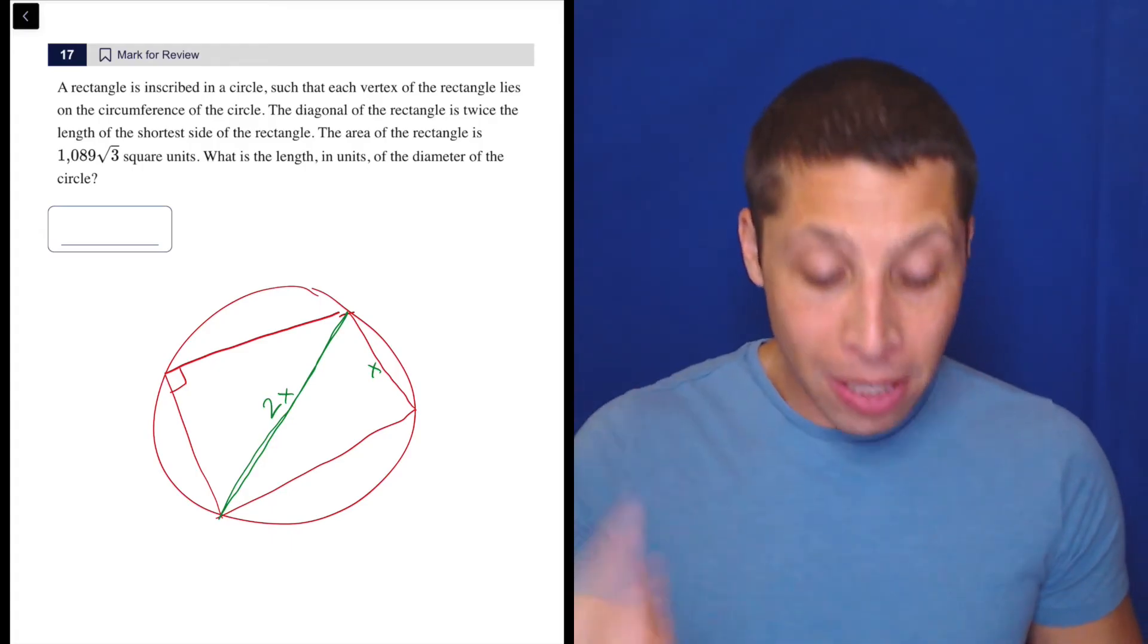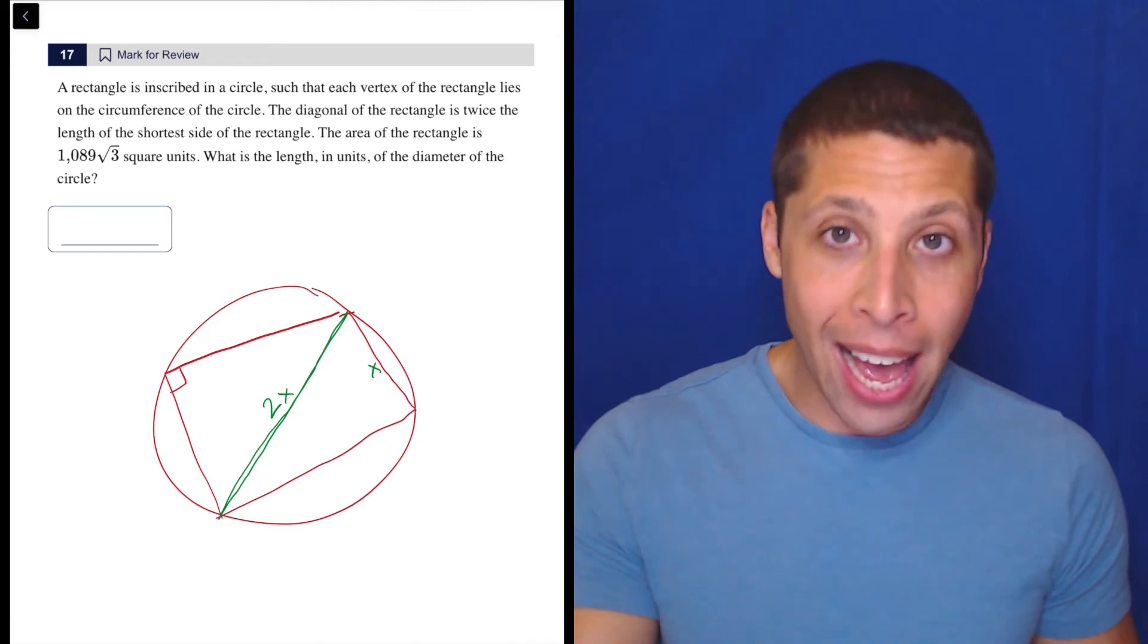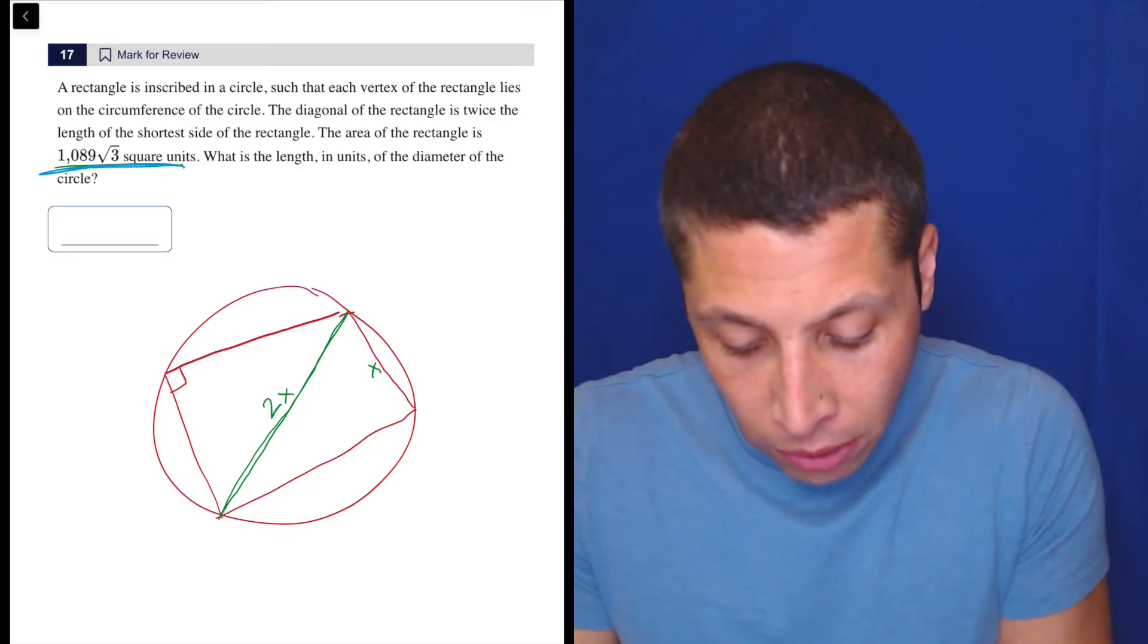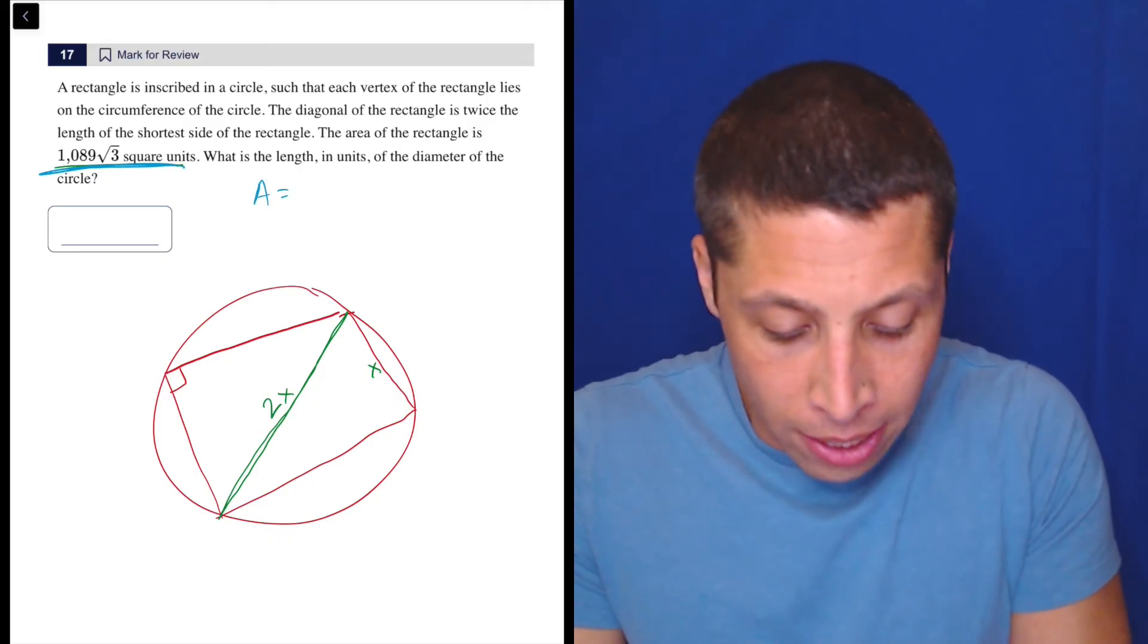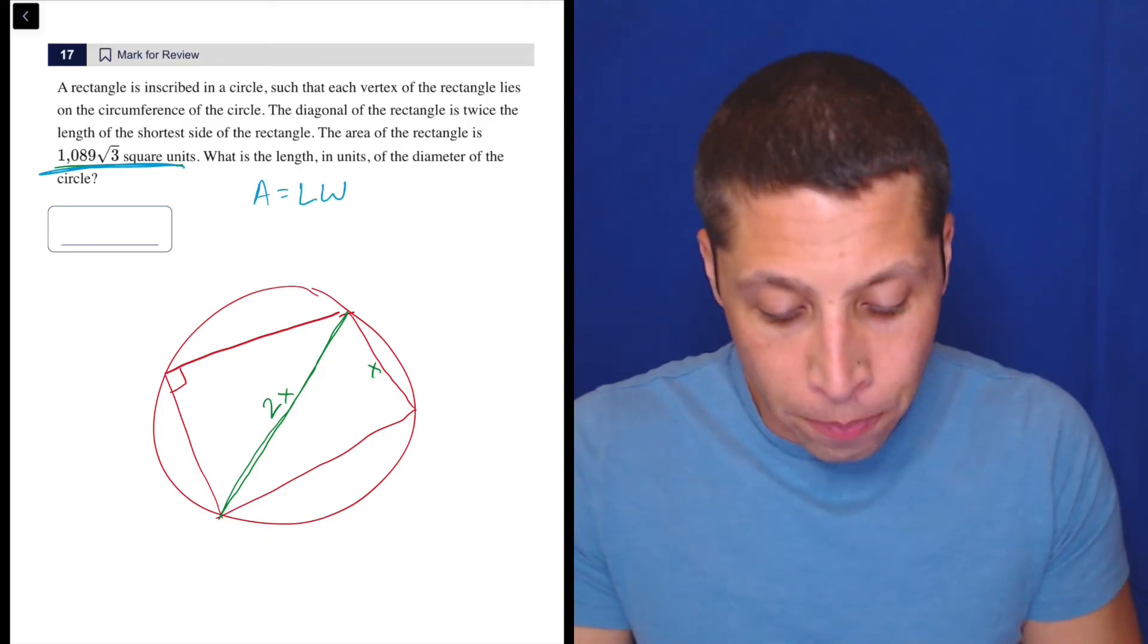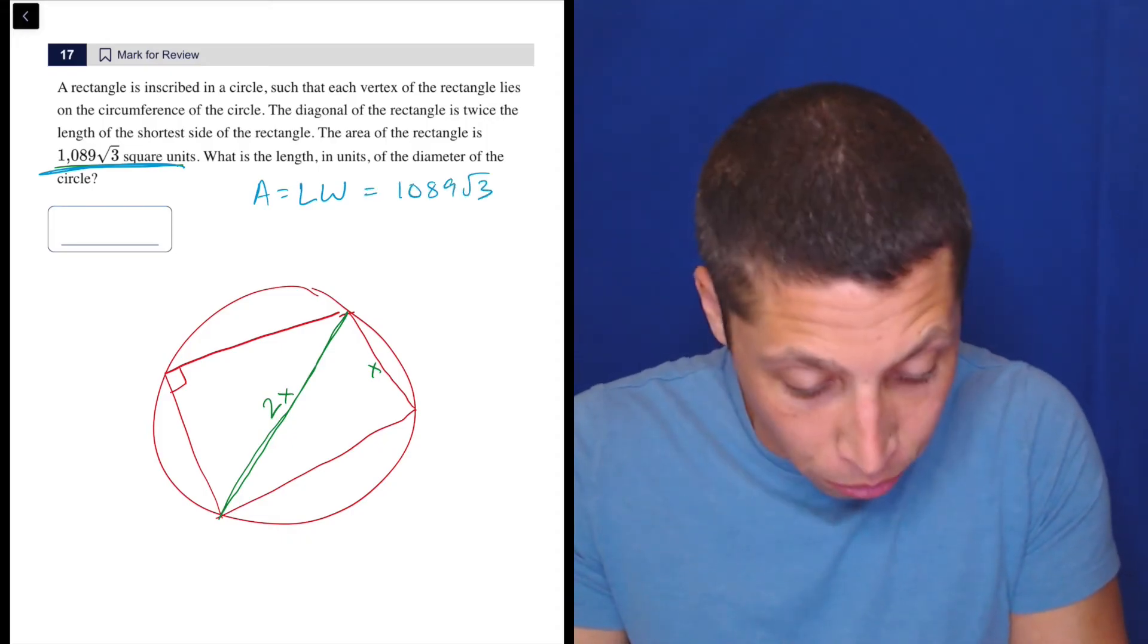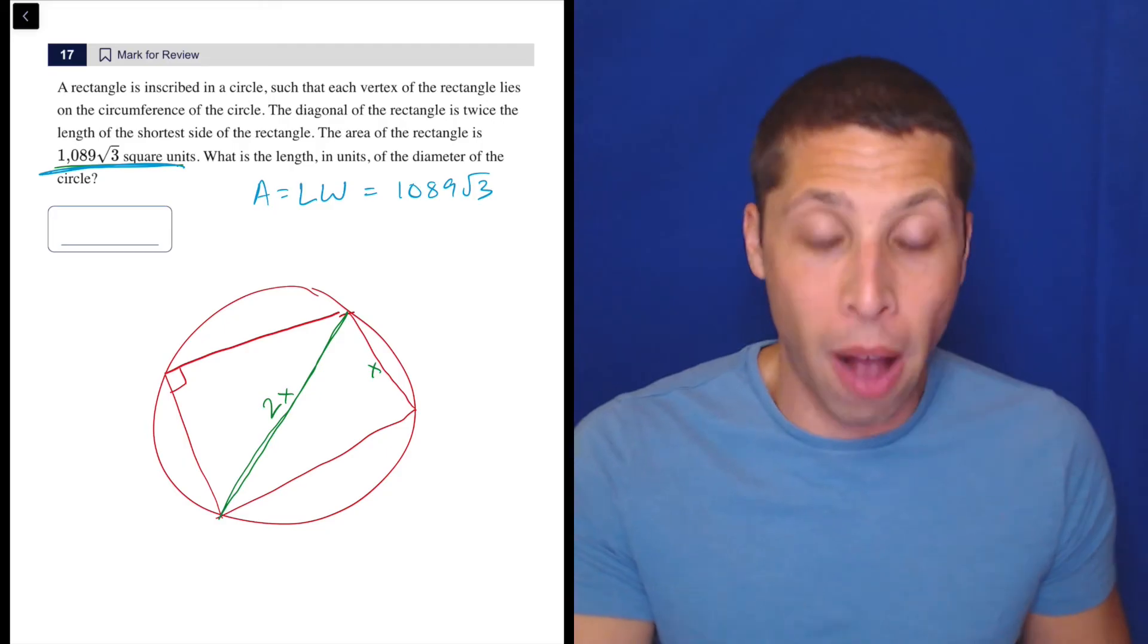So obviously there must be some way that we can get the sides here. Now, I guess I can put this here, right? We know the area of a rectangle, let's use a different color, the area of a rectangle is length times width. So that's going to be in this case, the 1089 root 3. So there's some messiness in here, but that doesn't bother me.